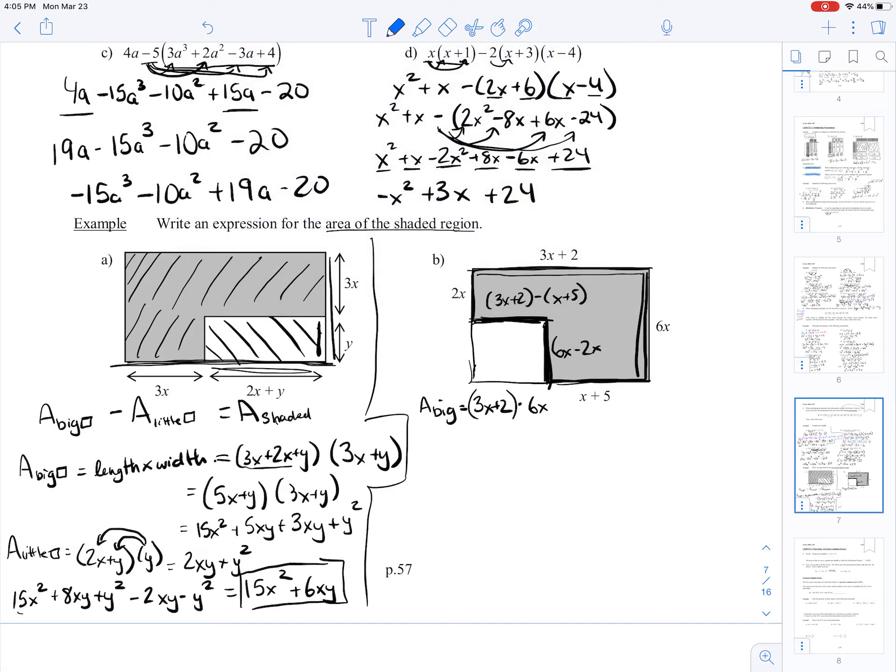So let's solve that. 3x plus 2 minus x minus 5. Well, 3x minus x is 2x, plus 2 minus 5 is minus 3. And over here, we've got 6x minus 2x, that's just 4x. So my area little is 2x minus 3 times 4x.